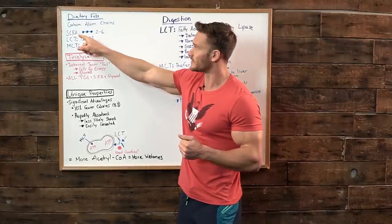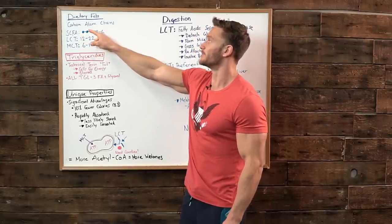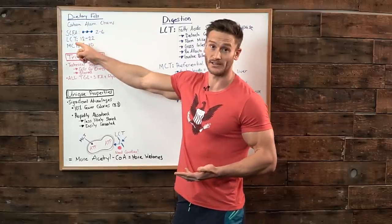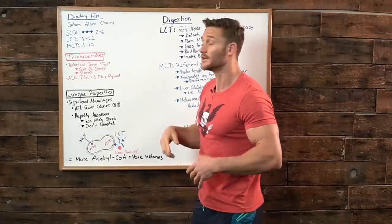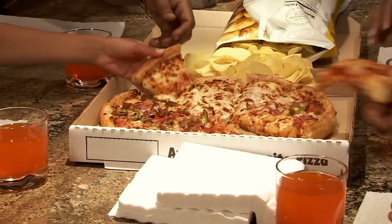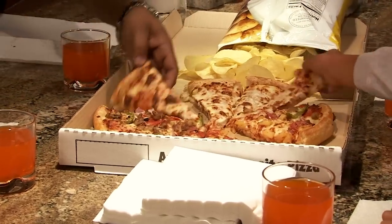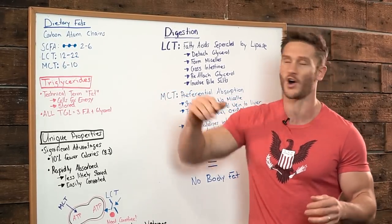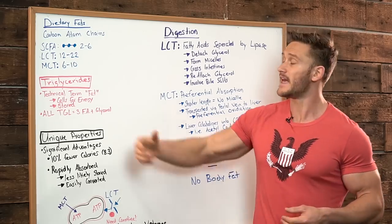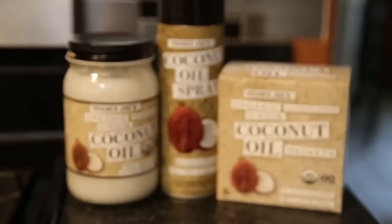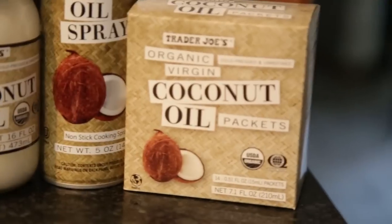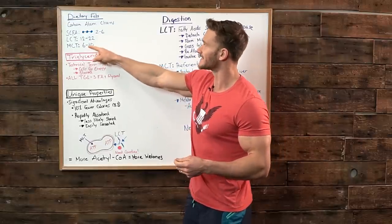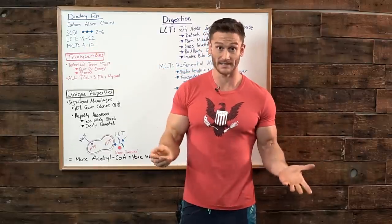A short-chain fatty acid is anywhere from two to six carbon atoms that are linked together. A long-chain triglyceride or long-chain fatty acid is predominantly the fats that we consume, almost all the fats that are not MCTs are LCTs. Those are anywhere from 12 to 22 carbon atoms linked together. Then we have MCTs, MCT oil, medium-chain triglycerides. It's a medium length chain of six to ten carbon atoms. That's what makes it an MCT.